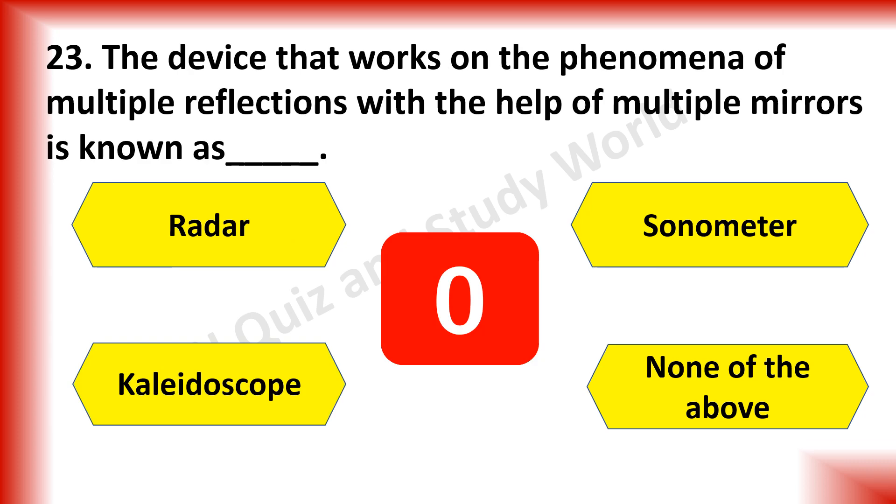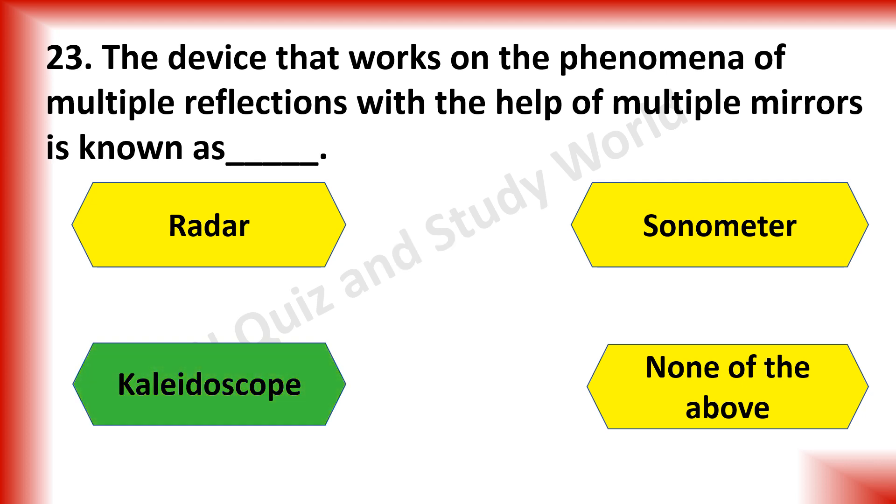The device that works on the phenomena of multiple reflections with the help of multiple mirrors is known as dash. Radar, sonometer, kaleidoscope or none of the above. The answer is kaleidoscope.